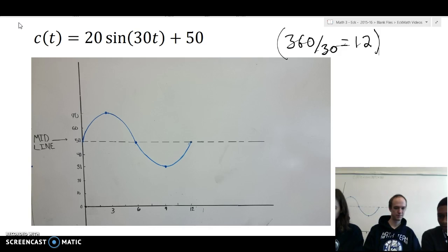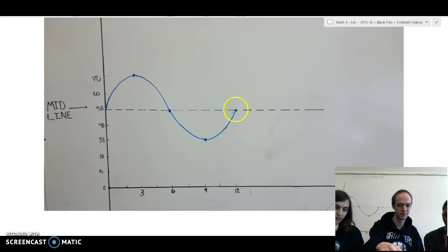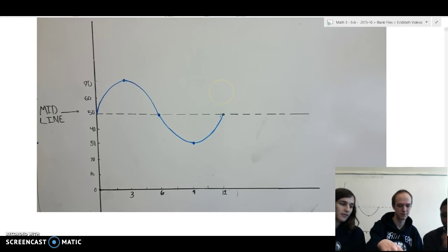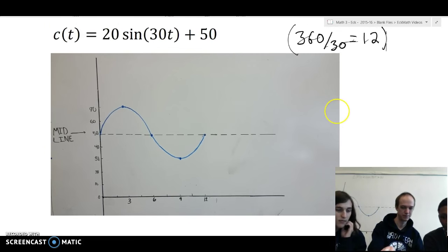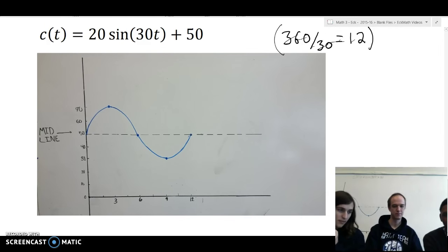And so, the midline on the graph would be 50 because the c-value of the equation is also 50. And to find the amplitude, you would look at the a-value, which is 20, in the beginning of the equation for sine. And since the amplitude is 20, the maximum on the graph would be 70, and the minimum on the graph would be 30.